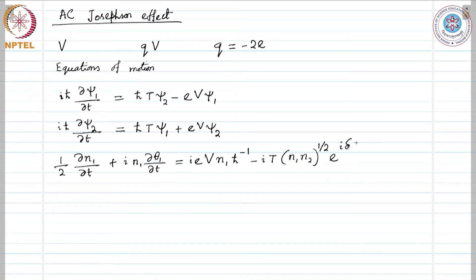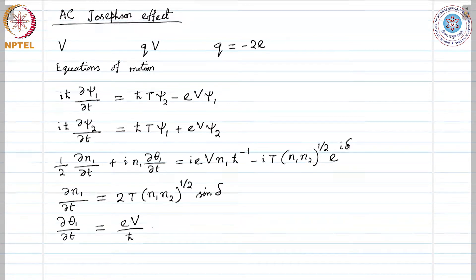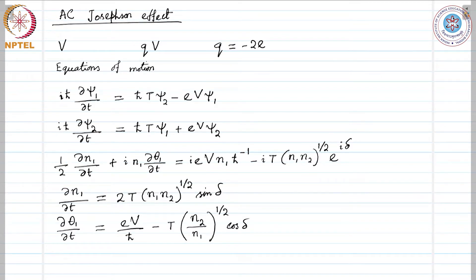From this equation, comparing real and imaginary parts: from the real parts we obtain ∂n₁/∂t = 2·T·(n₁·n₂)^(1/2)·sin(δ), and from the imaginary parts we obtain ∂θ₁/∂t = e·V/ℏ − T·(n₂/n₁)^(1/2)·cos(δ).